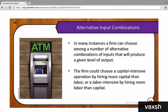In many instances, a firm can choose among a number of alternative combinations of inputs that will produce the same given level of output. The firm could choose a capital-intensive operation by hiring more capital than labor, or a labor-intensive operation by hiring more labor than capital and still get the same output. Should a bank use more ATM machines to distribute cash, or should they use more tellers, or both? What combination of ATMs and tellers should they use? Because one is capital and one is labor. They want the input combination that gives them the least cost possible, and that leads us to the cost-minimizing rule for factors of production.